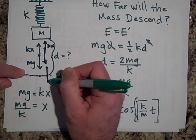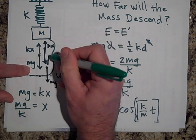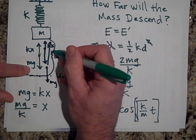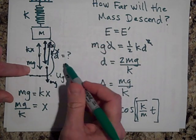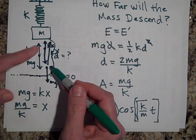Whereas when it goes by the equilibrium position, MG is the same size again, but KX is bigger. And when KX is bigger, then it's accelerating upward. All right, so that's that one.